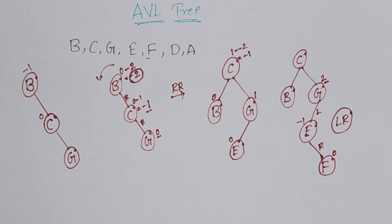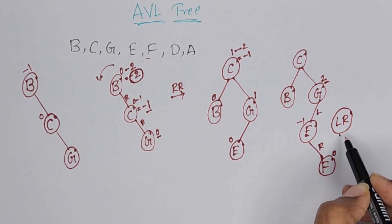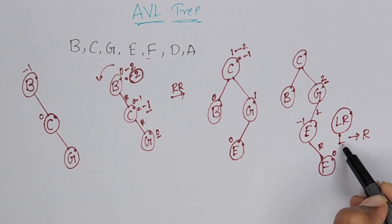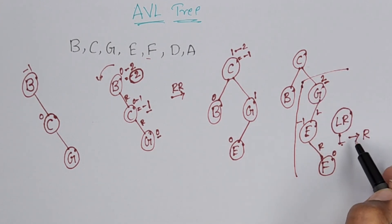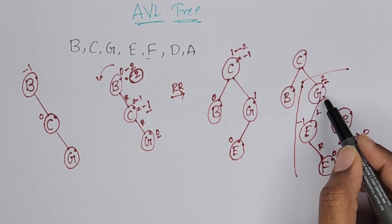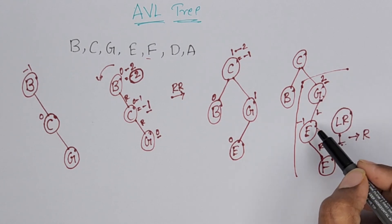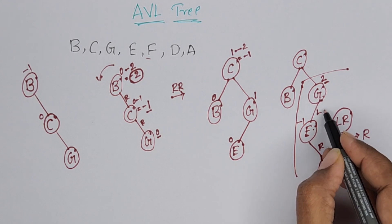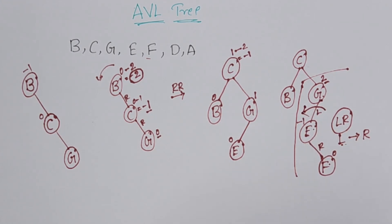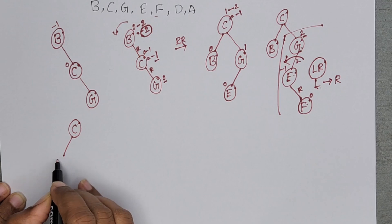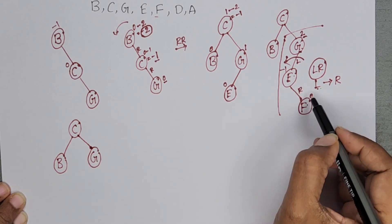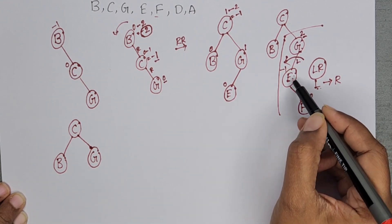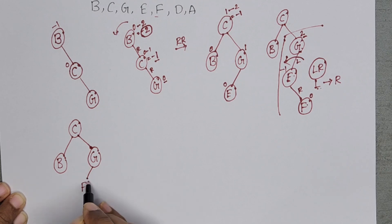When performing LR rotation, first perform L rotation, then perform R rotation. When performing left rotation, don't rotate the root. In this subtree, the root is G — don't rotate this one. The remaining characters we have to rotate left side. No need to rotate G. When you rotate left side, F goes up. G left is F. F left is E. This is the first rotation.